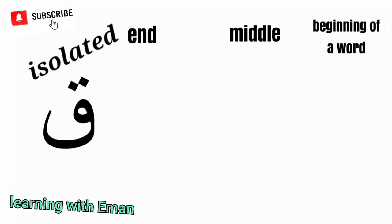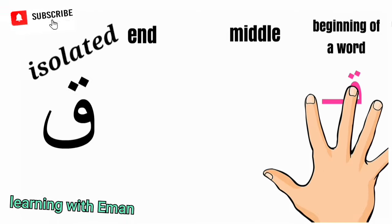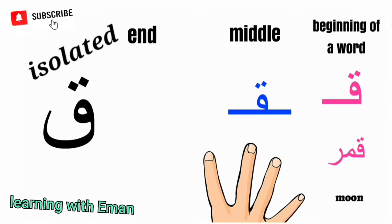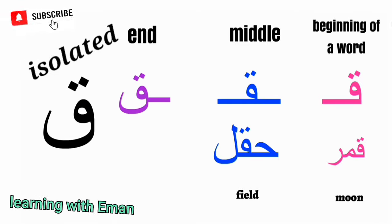Qaf is represented by the letter Q — it sounds like K except it's more throaty. At the beginning of a word, like 'Qamar', meaning moon. At the middle of a word, like 'Haql', meaning field. At the end of a word, like 'Nafaq', meaning tunnel.